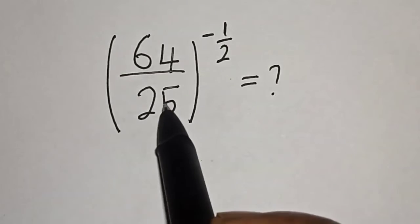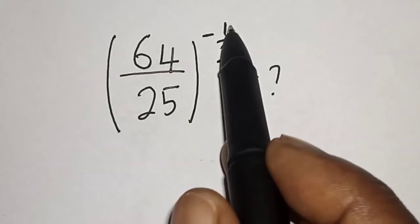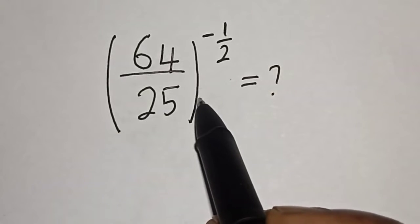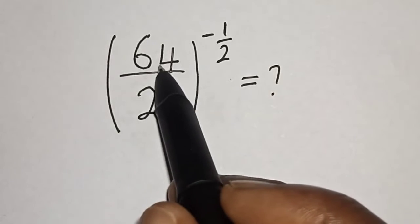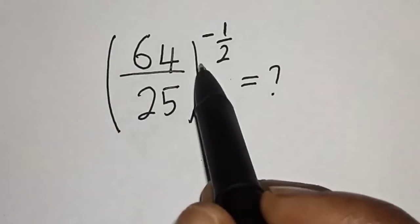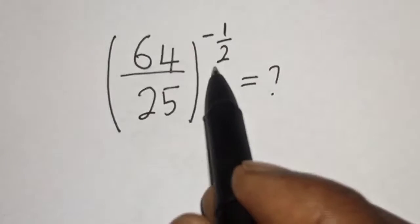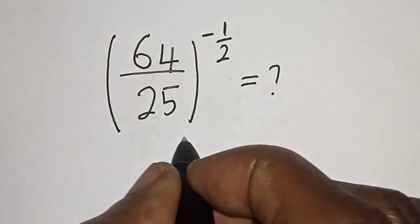64 divided by 25, all raised to the power of minus 1/2, is equal to what? Hi everyone, welcome to my class. In this class we want to evaluate this math problem: (64/25) to the power of minus 1/2. But before we proceed, please don't forget to like, share, comment, and subscribe.